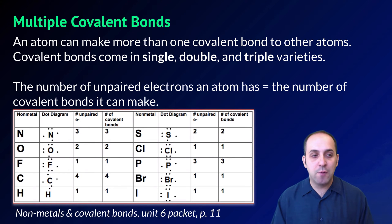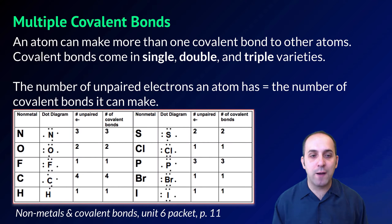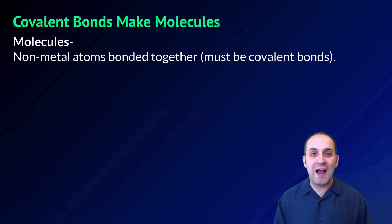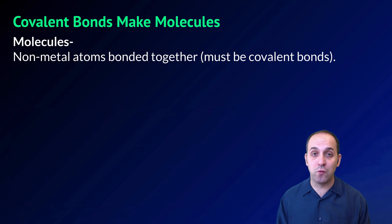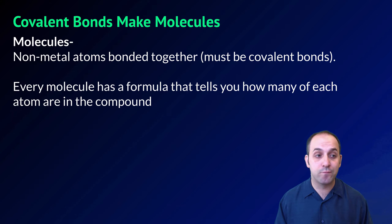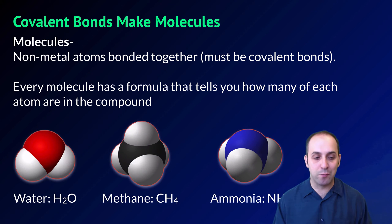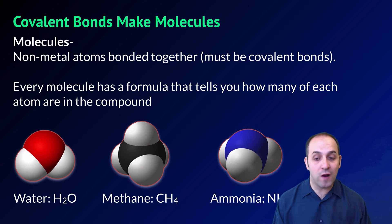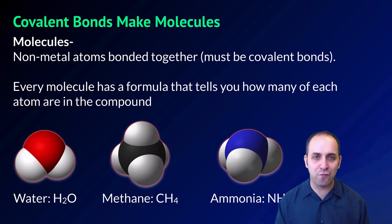You have this chart in your notes on page 11, but it shows you some of the more common nonmetals that form covalent bonds. You see the dot diagram for the element, you see the number of unpaired electrons it has, and you can see that in each case that equates to the number of covalent bonds that atom can make with other atoms. The term molecule actually refers exclusively to covalently bonded substances. Every molecule has a formula that tells you how many of each atom are in the compound. Here are three common examples: water, methane, and ammonia. Water has one oxygen and two hydrogens; methane has one carbon and four hydrogens; and ammonia has one nitrogen and three hydrogens. Notice that in each case we don't write the number one — the number one is frequently omitted, with the notion being that if it's written down at all, there's at least one of them there.